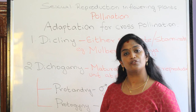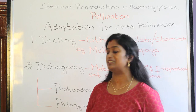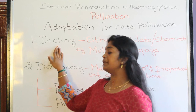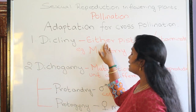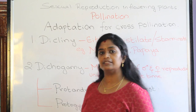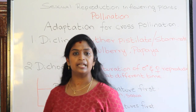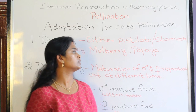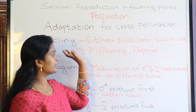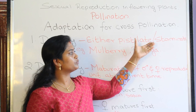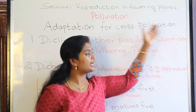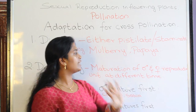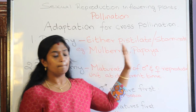The first adaptation of cross-pollination is called dioecy or unisexuality. In this condition, the plant would be either staminate or pistillate — it contains either the male reproductive unit or the female reproductive unit of the flower. If it contains only the male reproductive unit it is called staminate; if it contains only the female reproductive unit it is called pistillate. Examples are mulberry and papaya.